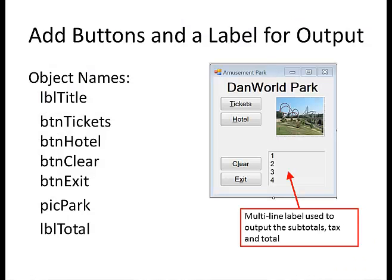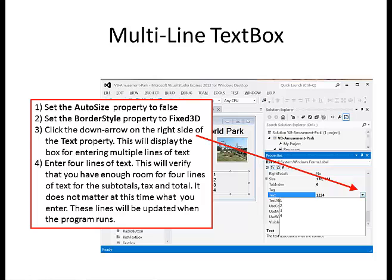Here are the object names I'm using: LBL_Title for the title, BTN_Tickets, BTN_Hotel, BTN_Clear, BTN_Exit, PicPark for the picture of the park, and LBL_Total. For the multi-line text box, set the auto size property to false and set the border style property to Fixed 3D. Click the down arrow on the right side of the text property — this will display the box for entering multiple lines of text. Enter four lines to verify that you have enough room for the subtotals, tax, and total. These lines will be updated when the program runs.